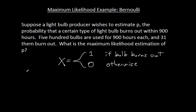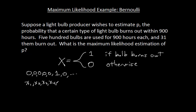So we have a bunch of values. Maybe the first five didn't burn out, and then the sixth one burned out — something of that sort. I'm going to call these my observations: x1, x2, x3, and so on. I'm giving them x with a subscript indicating which place in the sequence they fall.